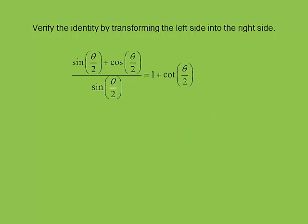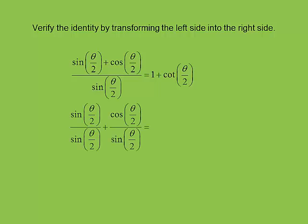Here's a good example showing that theta over 2 shouldn't freak you out. As long as they all have theta over 2, they just go along for the ride. I split the fraction into sine over sine plus cosine over sine — that's equivalent. Sine over sine equals 1, and cosine over sine equals cotangent. We get 1 plus cotangent equals 1 plus cotangent. The theta over 2 had nothing to do with this — as long as they all had theta over 2, we can proceed normally.